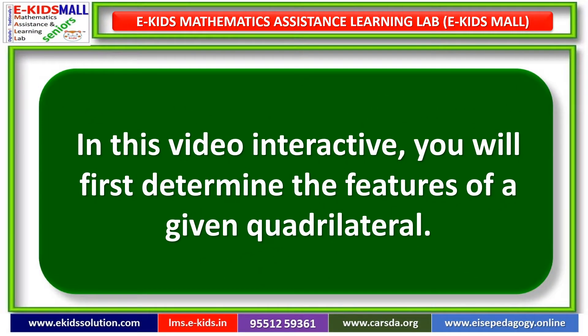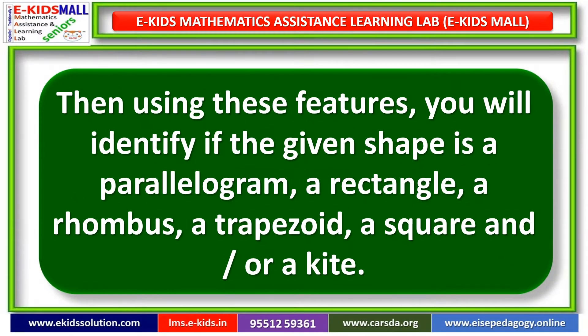In this video interactive, you will first determine the features of a given quadrilateral. Then using these features, you will identify if the given shape is a parallelogram, a rectangle, a rhombus, a trapezoid, a square, and or a kite.